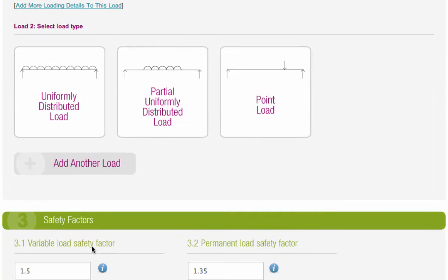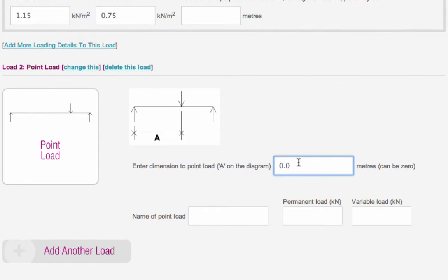For point loads, you will need to enter the dimension between the point load and the end of the beam, as well as its permanent and variable load. Finally, give this point load a name.